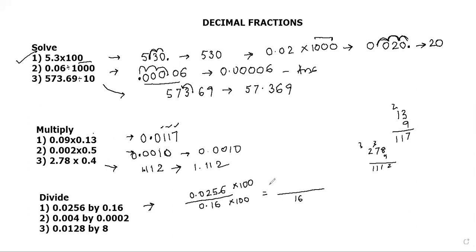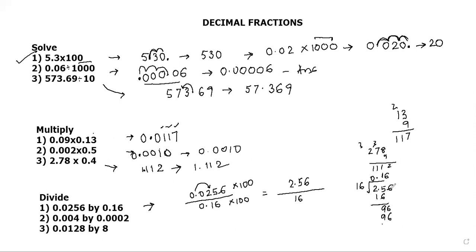Multiply 100 in the numerator as well — the decimal moves two places to the right — so the numerator becomes 2.56. Now we divide 2.56 by 16. Does 16 go into 2? No, so put a decimal and move right: 25 ÷ 16 = 1, remainder 9; 96 ÷ 16 = 6. The answer is 0.16.